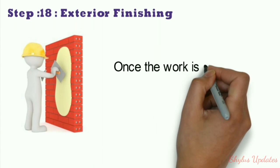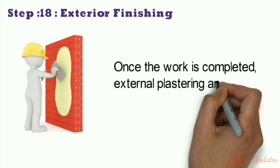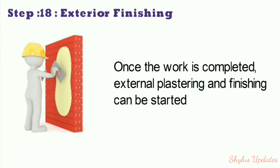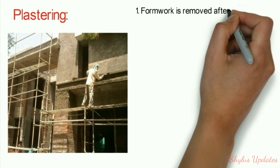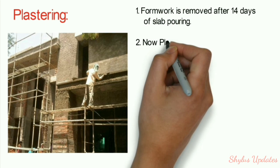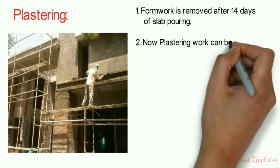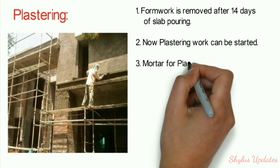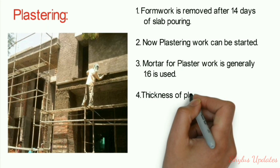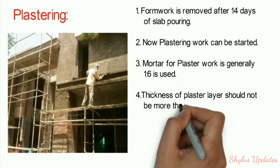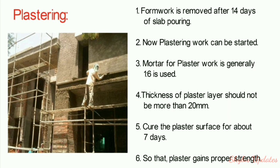Step 18: Exterior finishing. Once the work is completed, external plastering and finishing can be started. Formwork is removed after 14 days of slab pouring. Mortar for plaster work is generally 1:6. Thickness of the plaster layer should not be more than 20 mm. Cure the plaster surface for about 7 days so the plaster gains more strength.